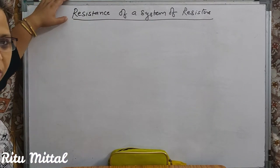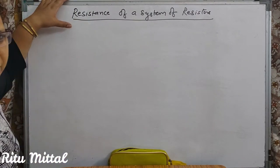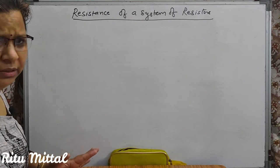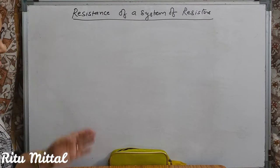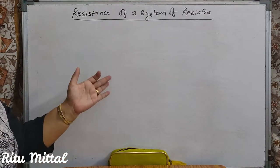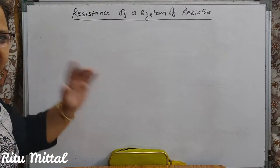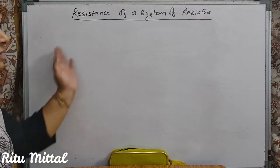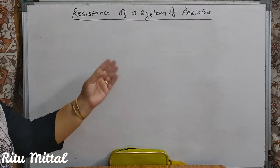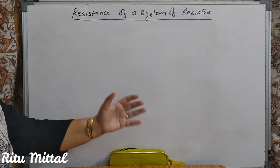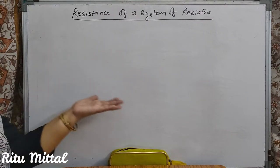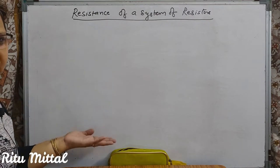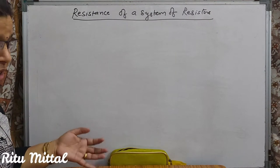Students, today we are going to discuss when we have multiple resistances. Till now, what we have done — we had only one resistance in the circuit, and that is connected in series with the emitter, in parallel with the voltmeter, and we have seen the connection.